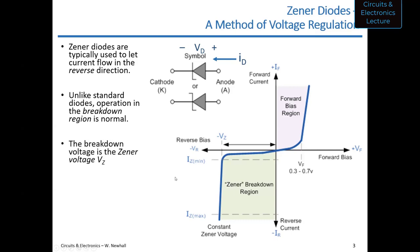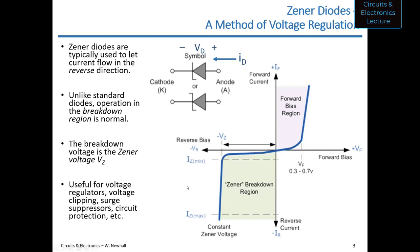The zener voltage Vz is specified, and you choose a zener diode based on that voltage for your application. Zener diodes are useful for voltage regulators, voltage clipping to protect a circuit from large input surges, surge suppression such as lightning protection from high-voltage spikes, and general circuit protection from overvoltage conditions. These are their typical applications.